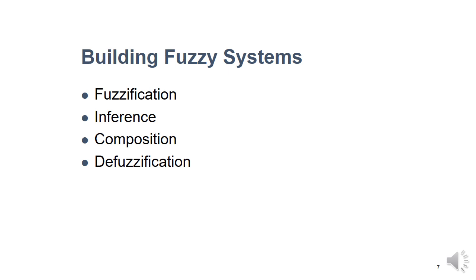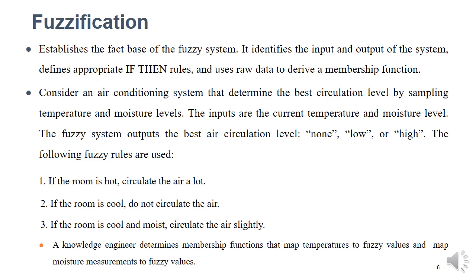The steps involved in building a Fuzzy system are Fuzzification, Inference, Composition, and Defuzzification. Fuzzification establishes the fact base of the Fuzzy system — it identifies the input and output of the system, defines appropriate if-then rules, and uses raw data to derive a membership function. For example, consider an air conditioning system that determines the best circulation level by sampling temperature and moisture levels. The inputs are the current temperature and moisture levels. The Fuzzy system outputs the best air circulation level: none, low, or high.